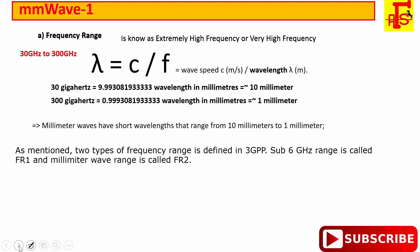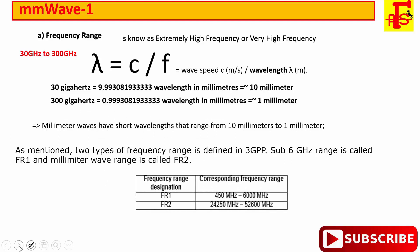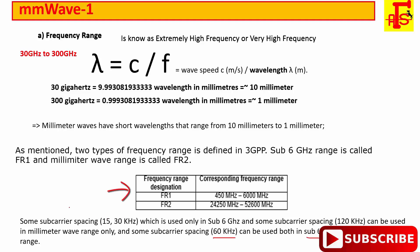Two types of frequency range are defined in 3GPP. The sub-6 GHz range is called FR1, and the millimeter wave range is called FR2. Subcarrier spacings of 15 kHz and 30 kHz are used only in sub-6 GHz, that is FR1. Subcarrier spacing of 120 kHz is used in the millimeter wave range, FR2. Subcarrier spacing of 60 kHz can be used in both FR1 and FR2.